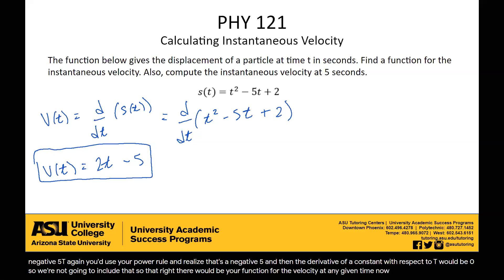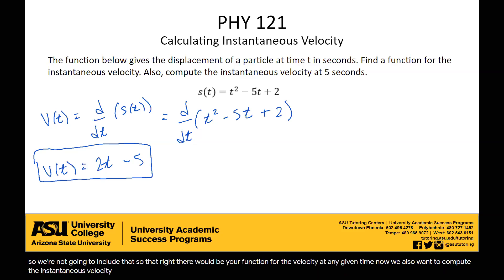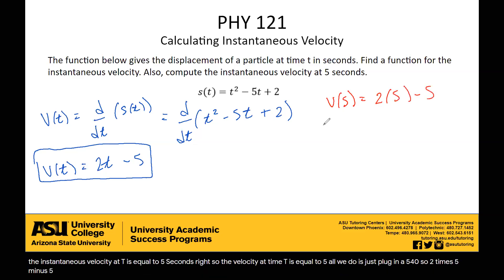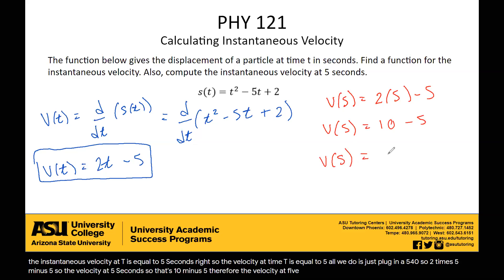Now, we also want to compute the instantaneous velocity at t equals 5 seconds. So the velocity at time t equals 5 — all we do is just plug in a 5 for t. So 2 times 5 minus 5. The velocity at 5 seconds is 10 minus 5. Therefore, the velocity at 5 seconds is equal to 5 meters per second.